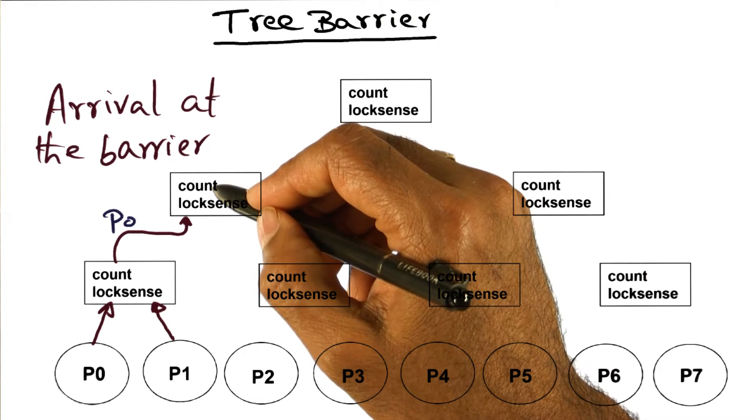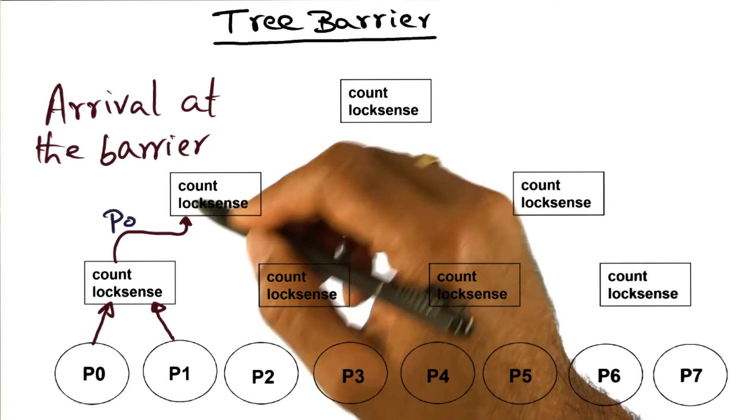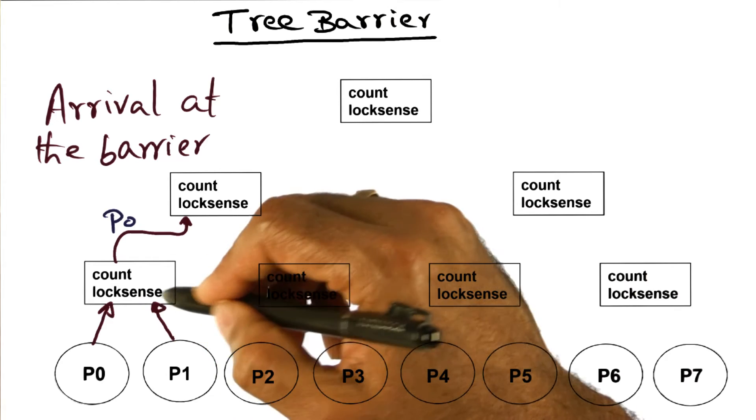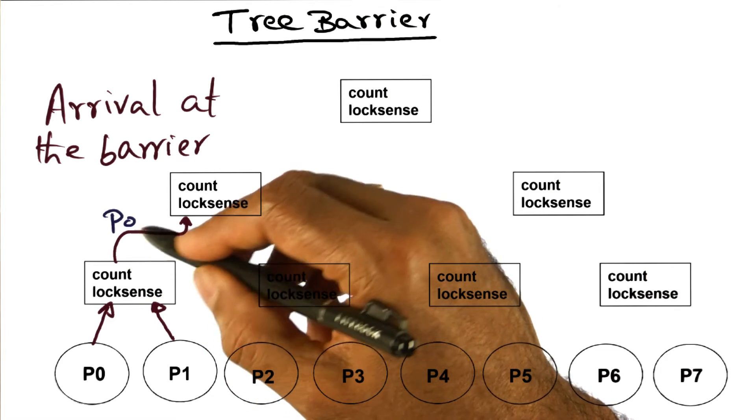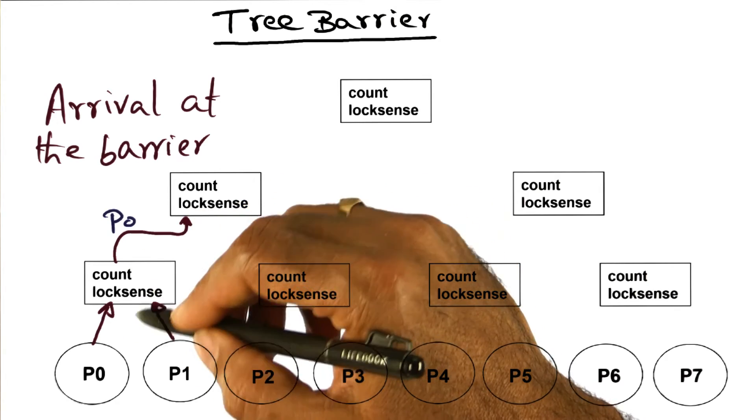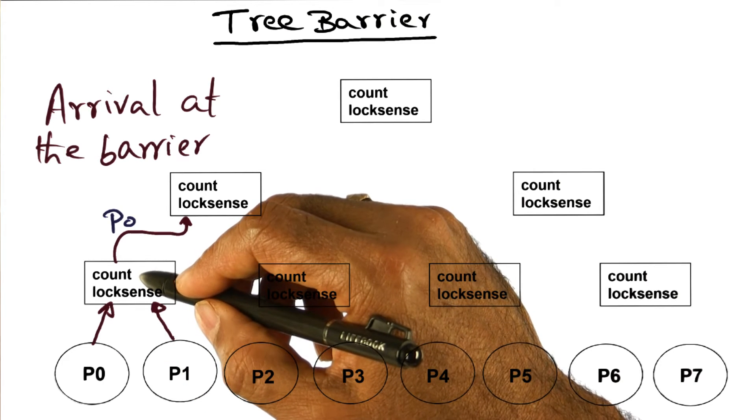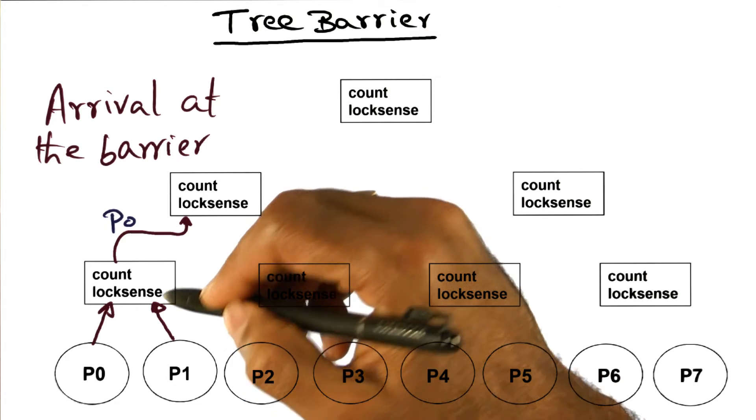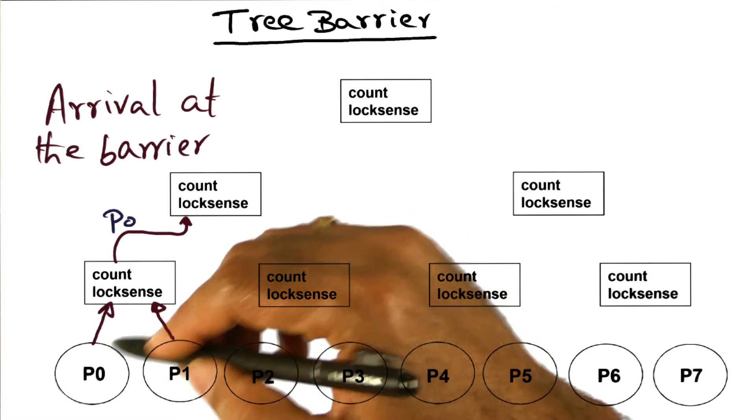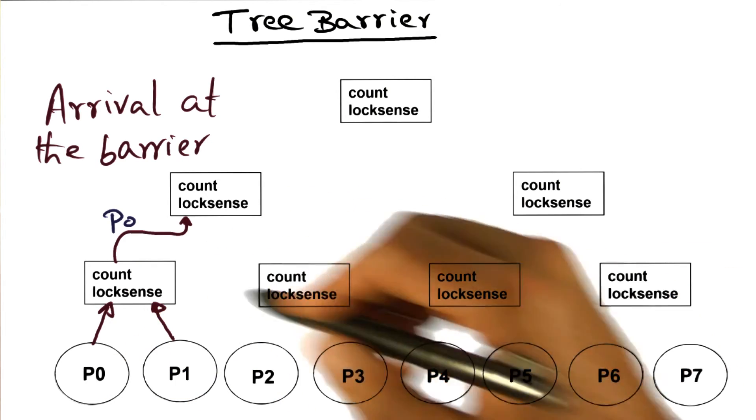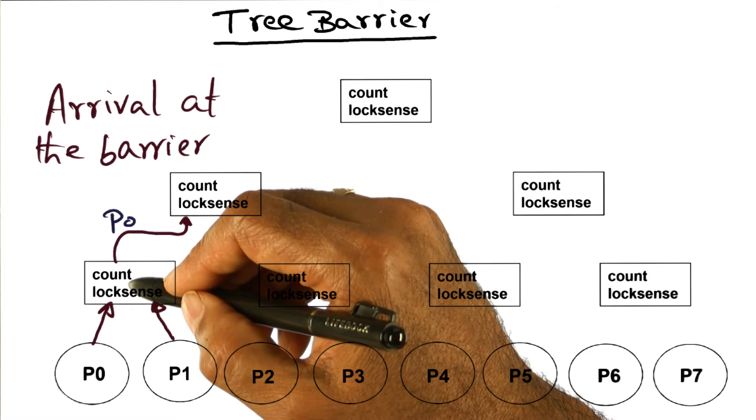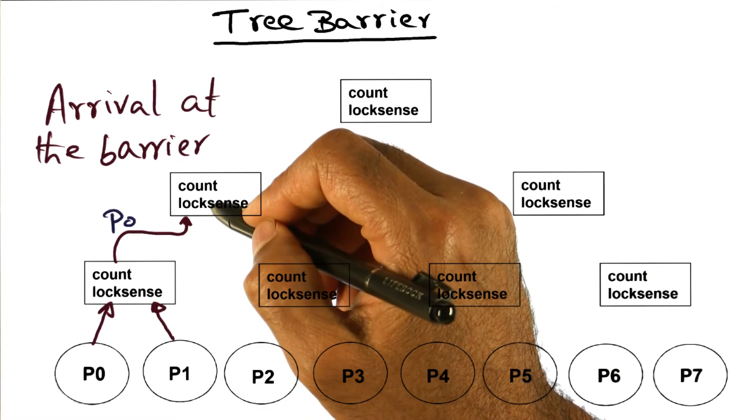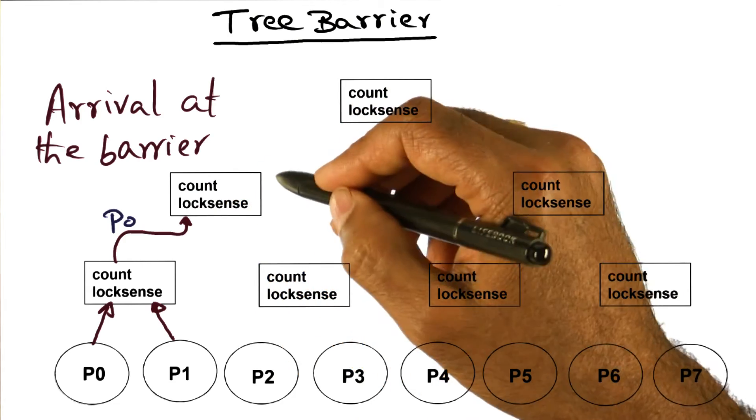But I have to go up and go to the next level up. And here I'm going to decrement the count here to indicate that I've arrived at the barrier. So p0 is the one that moves up the tree. p1 is stuck here waiting for sense to reverse. p0 moves up. So remember that even though p0 has come here and decremented the count and made it zero, it doesn't flip the sense flag yet, right? Because the barrier will be done only when everybody has arrived.